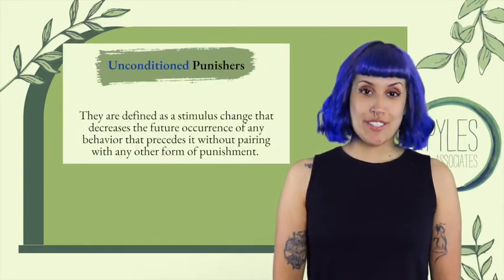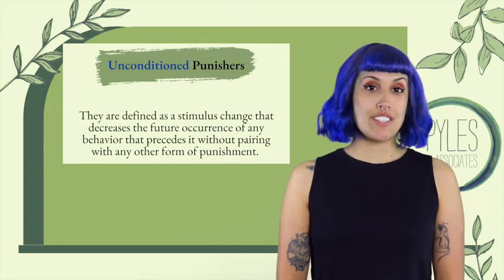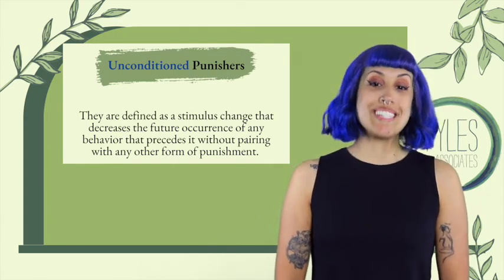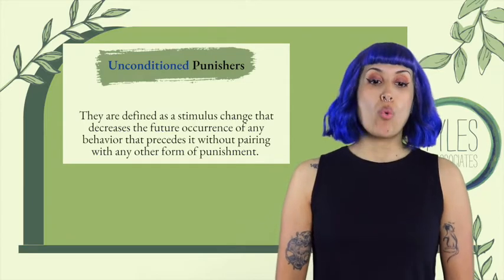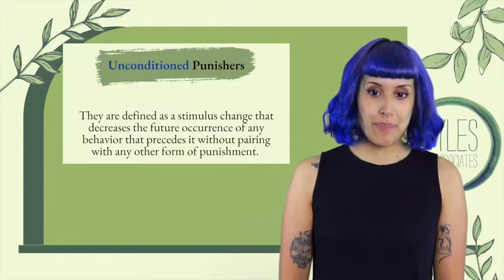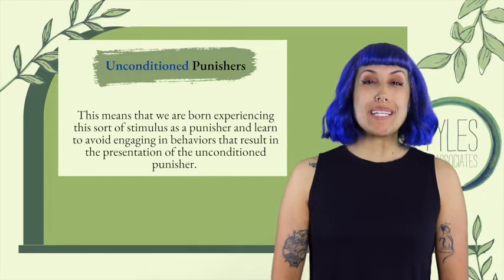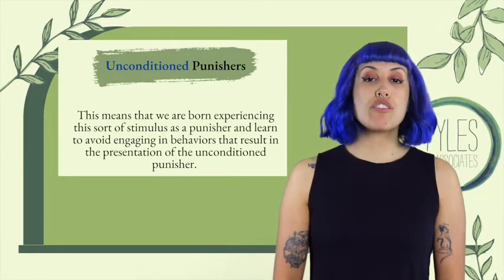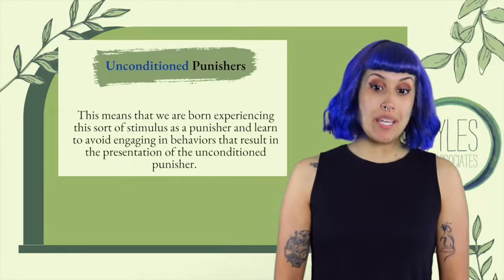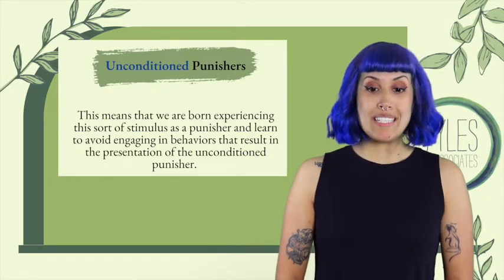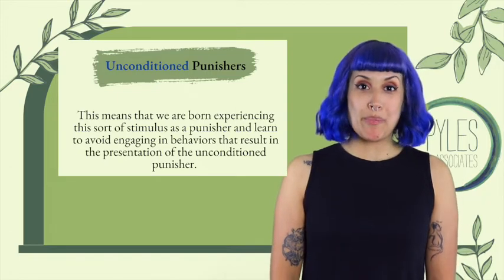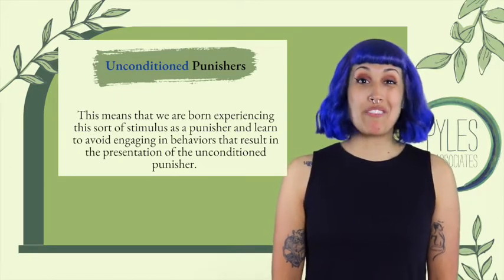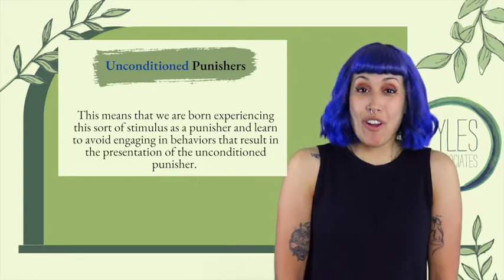Unconditioned punishers are defined as stimulus change that decreases the future occurrence of any behavior that precedes it without pairing with any other form of punishment. This means that we are born experiencing this sort of stimulus as a punisher and learn to avoid engaging in behaviors that result in that unconditioned punishment. For example, I don't need to be taught that pain will be painful — I know that if I cut myself with a knife it's going to hurt.